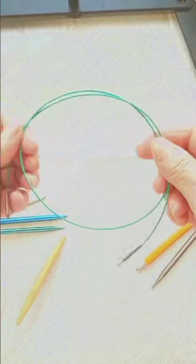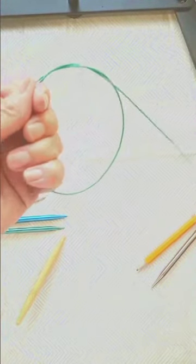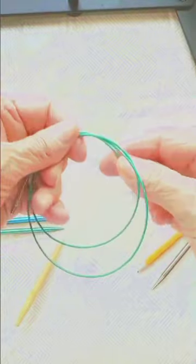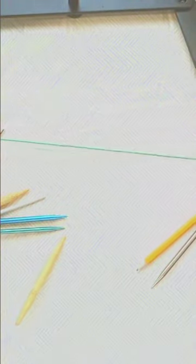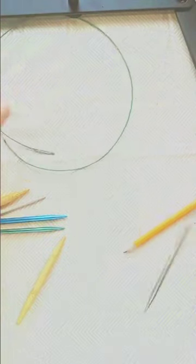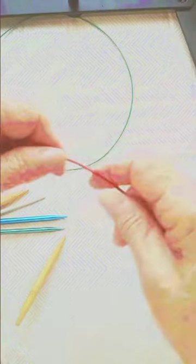With cables of circular needles, these are the Knitter's Pride from the Mindful collection. You can store them like that and they don't twist, so you can work with them very easily. Very nice. These are the ChiaoGoo ones.